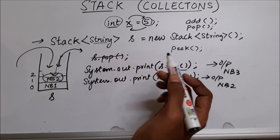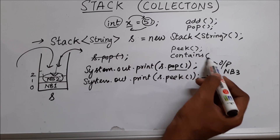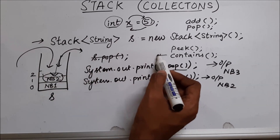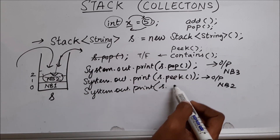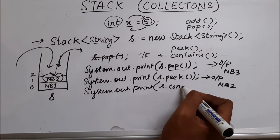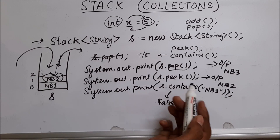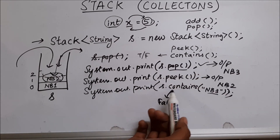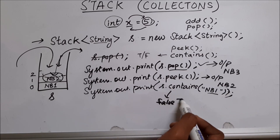Let me talk about one more function in stack — it is called contains. What contains does is it goes and checks if something is present in the stack and gives you an output of true or false. Let's check if NB three is present inside the stack. This is going to give me false, because we removed NB three from the stack when we used pop. Contains helps us search for something inside the stack. If I say NB one, this is going to give me true.